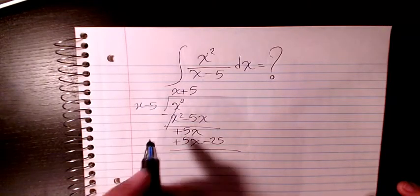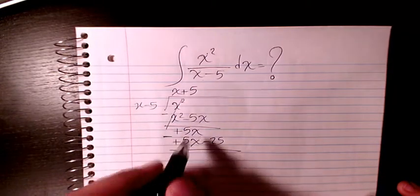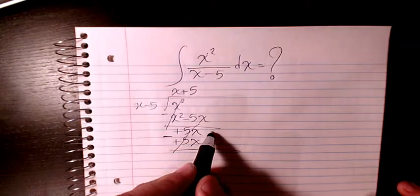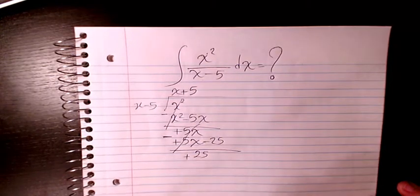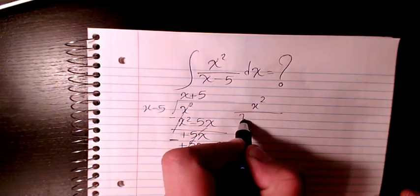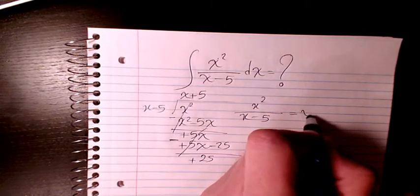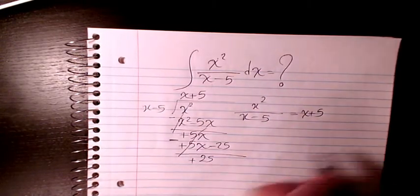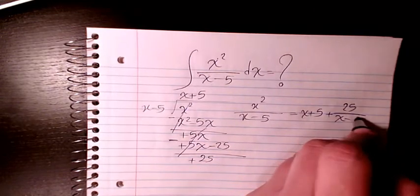Alright, so we have 5x minus 5x minus 25. These two cancel out and we have 0 minus negative 25, so it will be positive 25. So x squared divided by x minus 5 will be x plus 5 plus 25, which is the remainder divided by the quotient here.